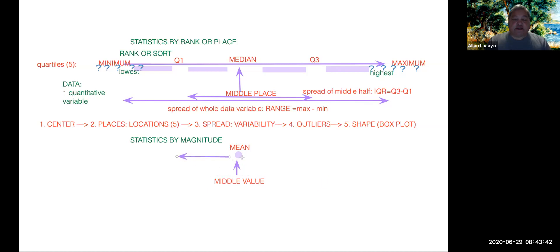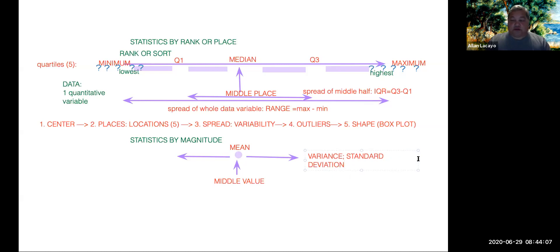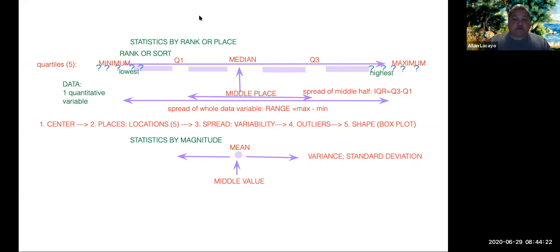After we find the middle value of the data set, we measure how those values are spread around the middle. Those measures of spread are called the variance and the standard deviation. Once we have learned to describe how data values differ in magnitude from the mean, we then move to measure specific locations in the data — values that tend to be located equidistant from the mean.